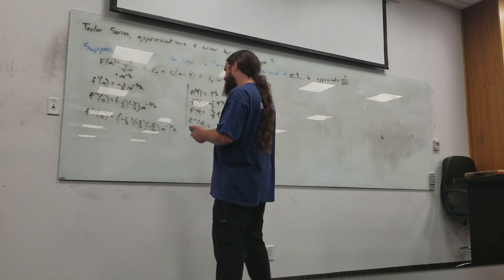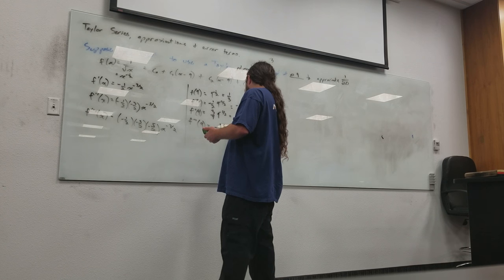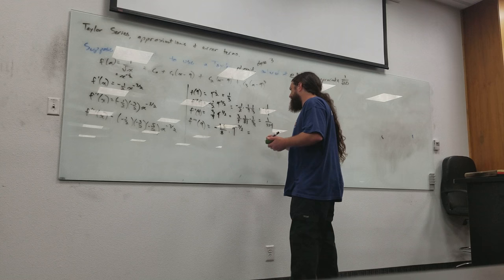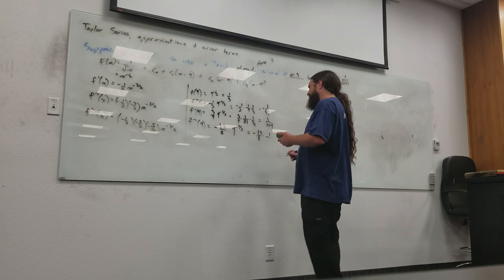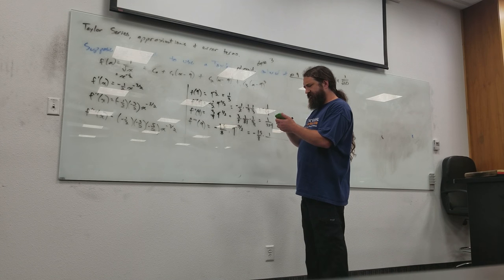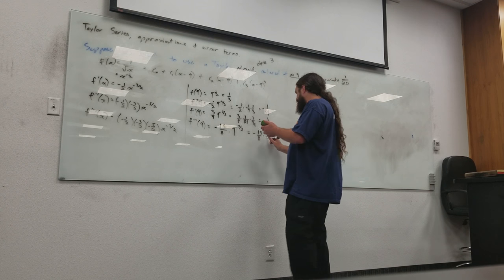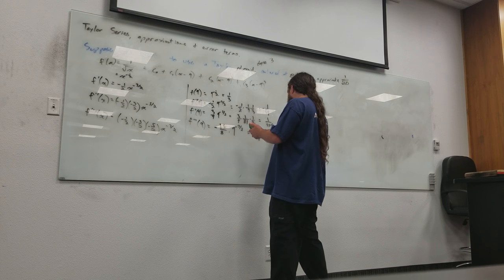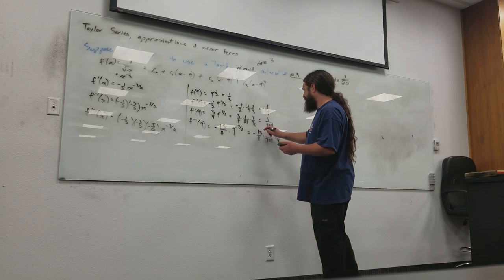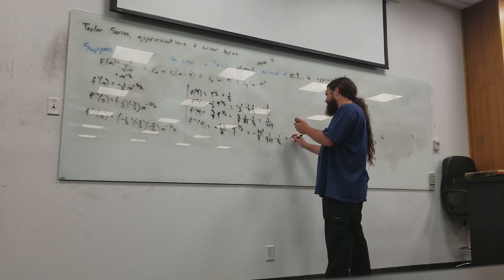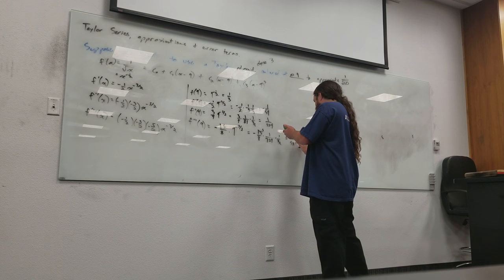f double prime, this is the one that is three-fourths times nine to the negative five-halves. So, this is three-fourths times one over eighty-one times one-third, is that right? Yeah. Because it's the two-and-a-half power on the bottom. Threes cancel, and I get one over three-twenty-four, is that what you're getting? Okay. Then f triple prime, looks like I've got negative fifteen over eight times nine to the negative seven-halves. Alright. So, it's going to be negative fifteen over eight times one over nine-cubed, seven-twenty-nine, and then also times one-third, because that's the extra-half power. That cancels out some, and I got negative five over seven-twenty-nine times eight, which is five-eight-three-two. Okay.